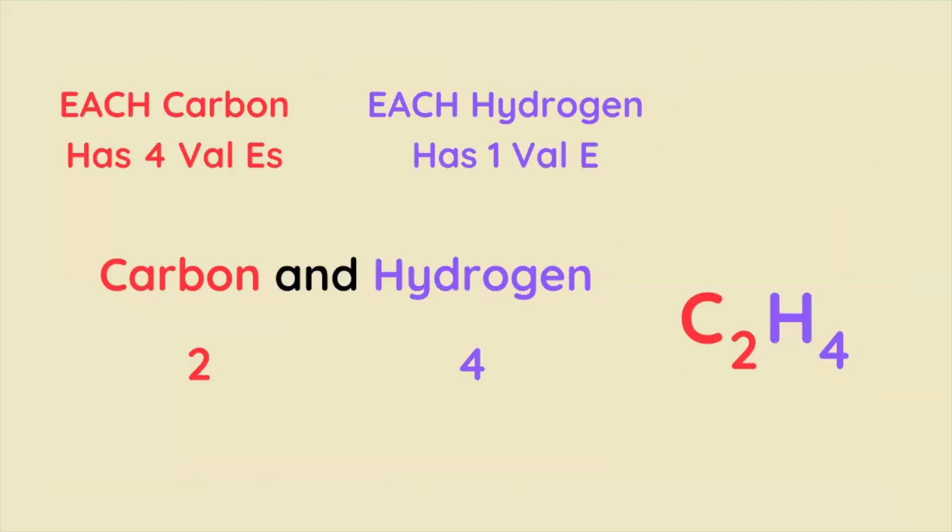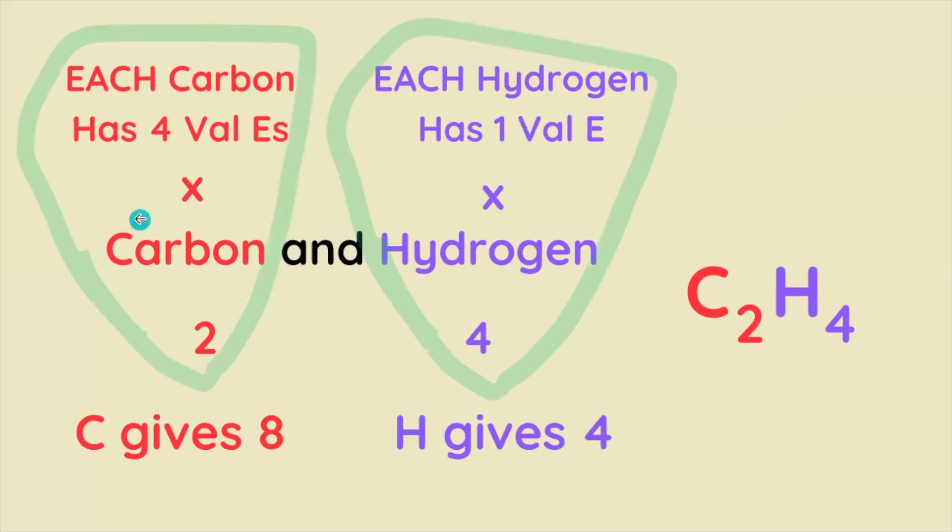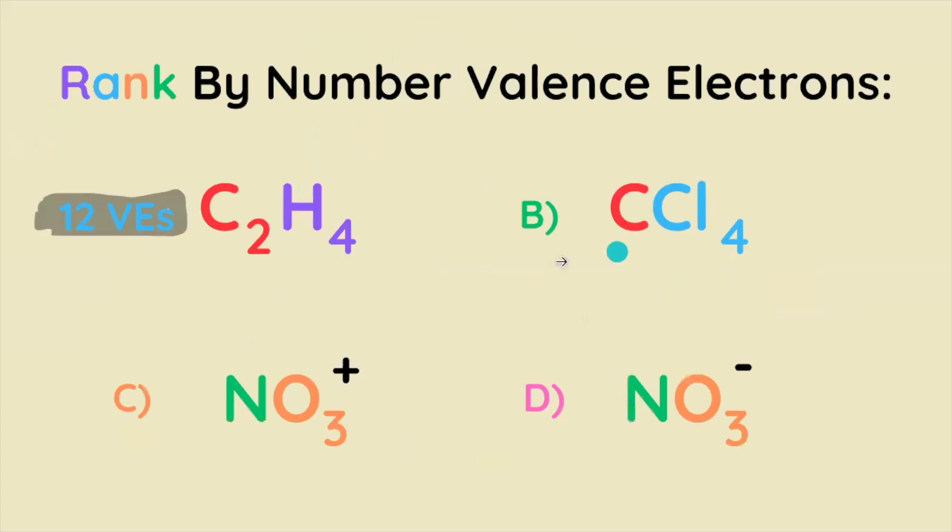Here's where it all comes together. We know how many valence electrons there are for one carbon and for one hydrogen, but the molecular formula tells us that we have multiple of each of these. Four times two means that carbon contributes eight valence electrons to the molecule, and one times four means that hydrogen contributes four valence electrons. Eight plus four equals twelve, so that means that C2H4 has twelve valence electrons, and we have to calculate the rest to figure out how to correctly rank and compare each of these.